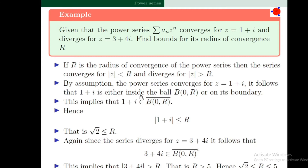Next problem: given that the power series converges for z = 1+i and diverges for z = 3+4i, find bounds for its radius of convergence R. If R is the radius of convergence, then the series converges for |z| < R and diverges for |z| > R.